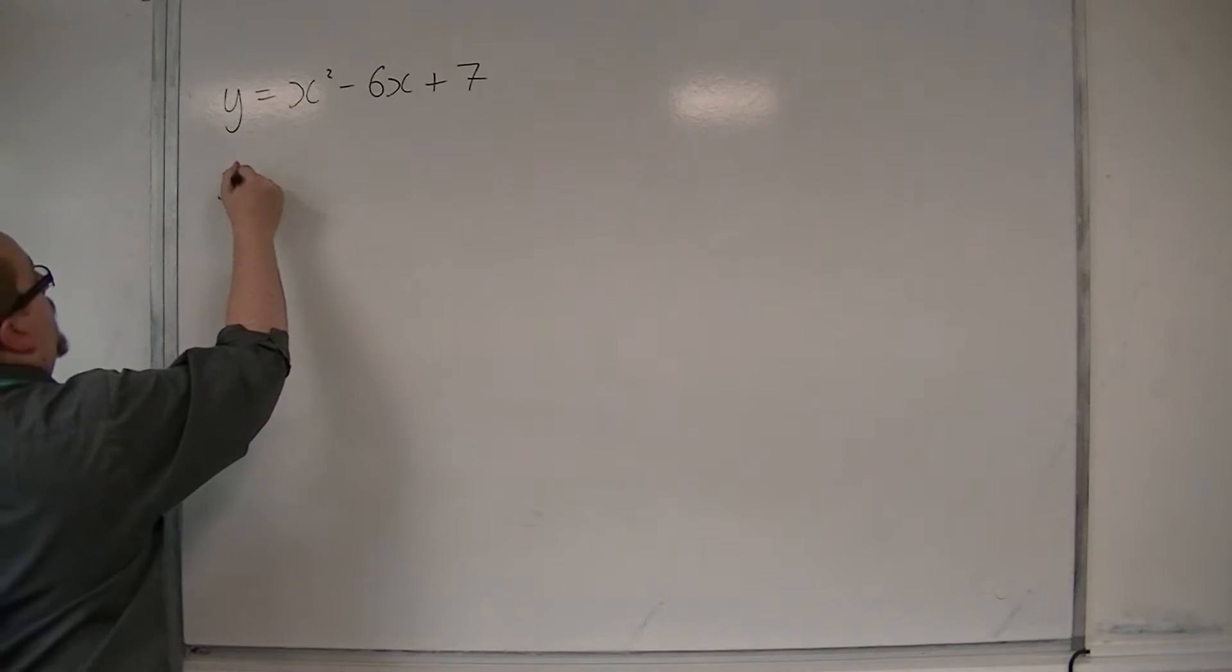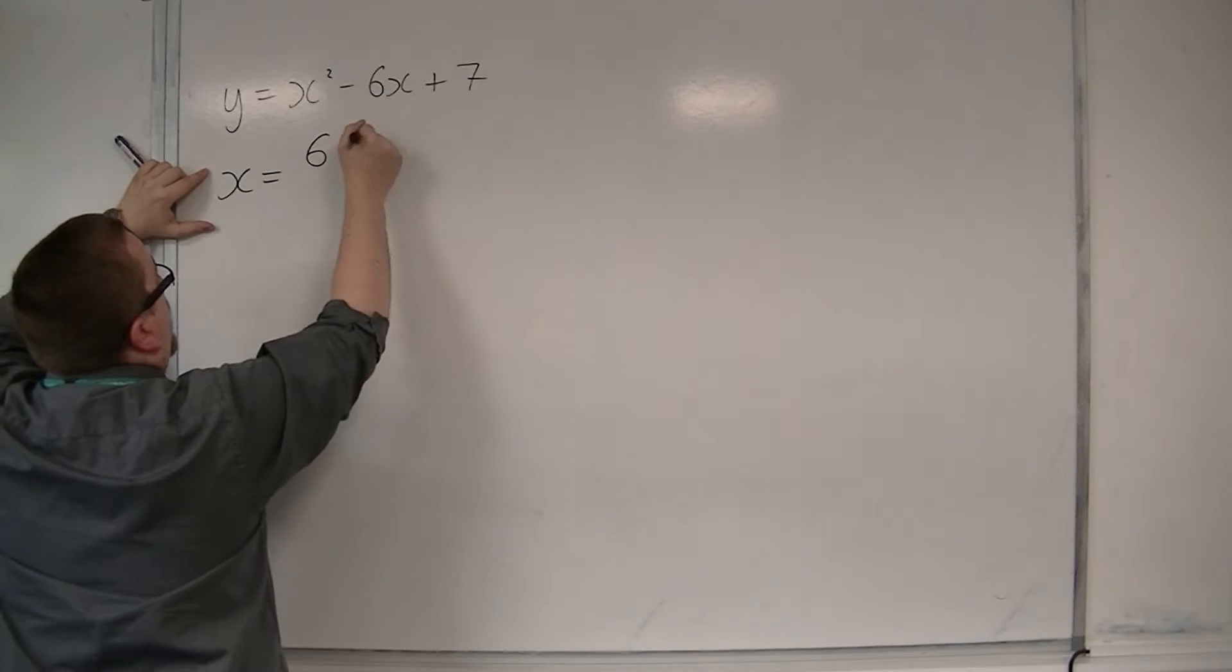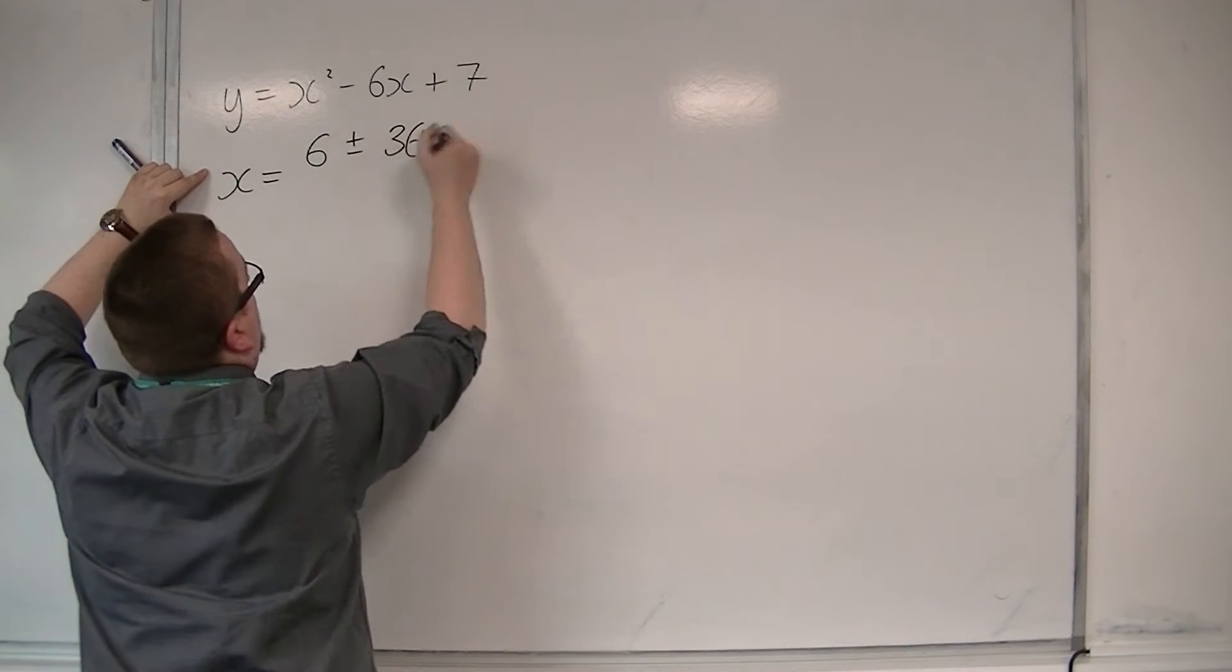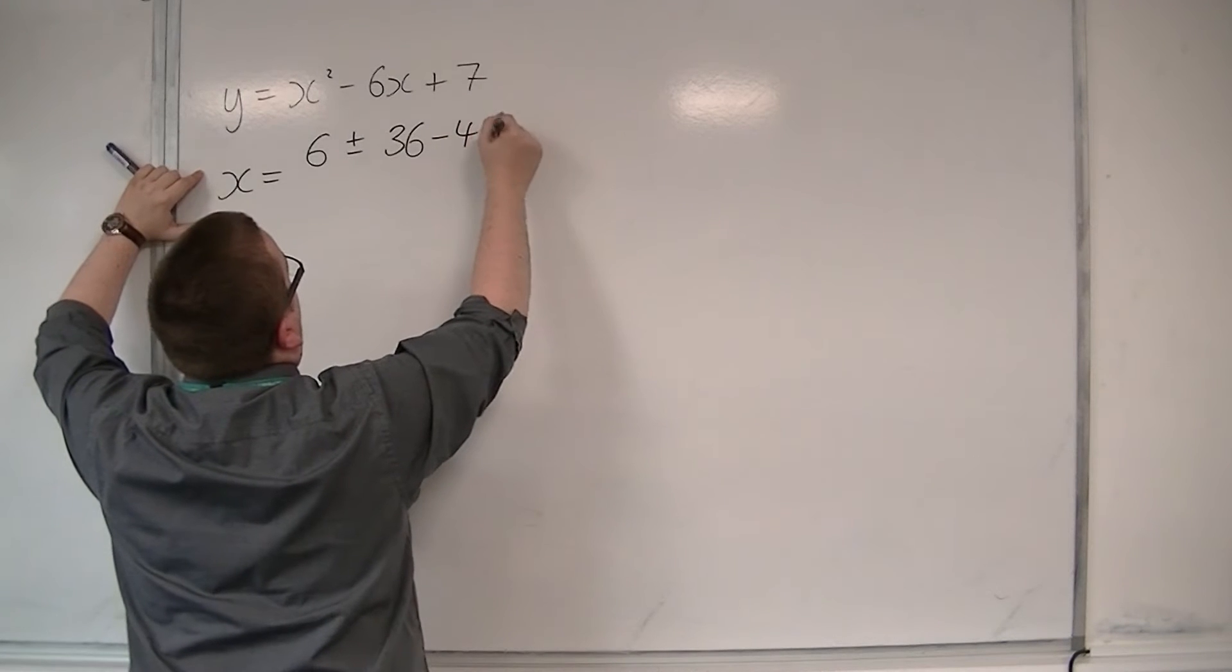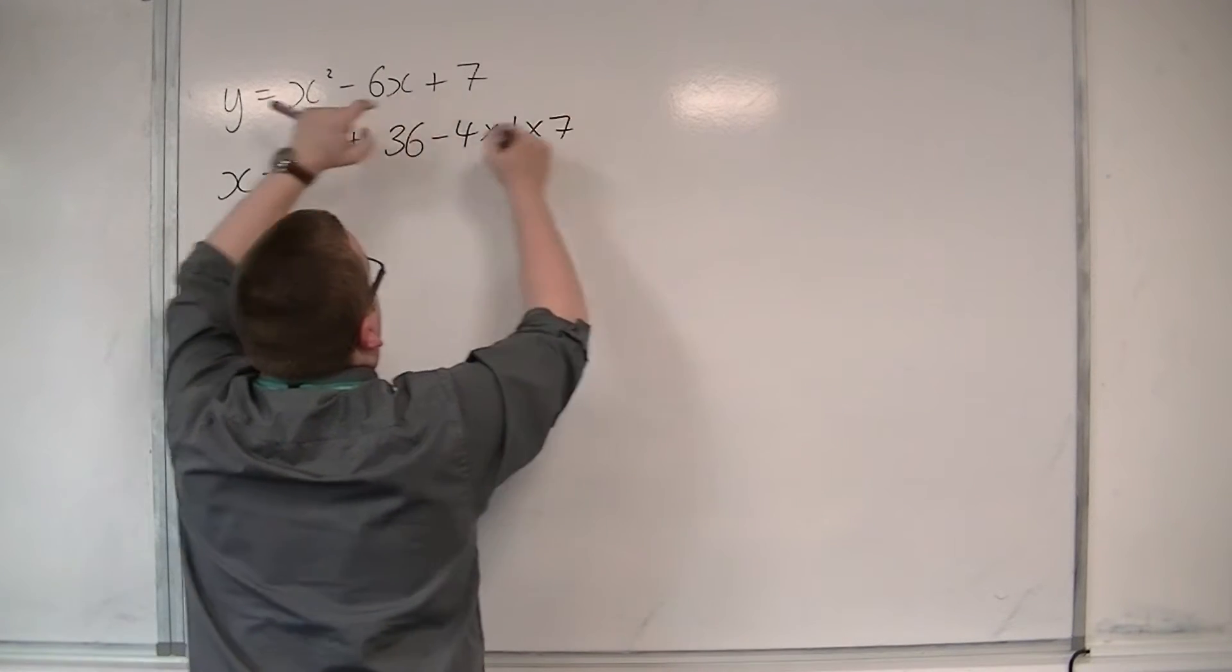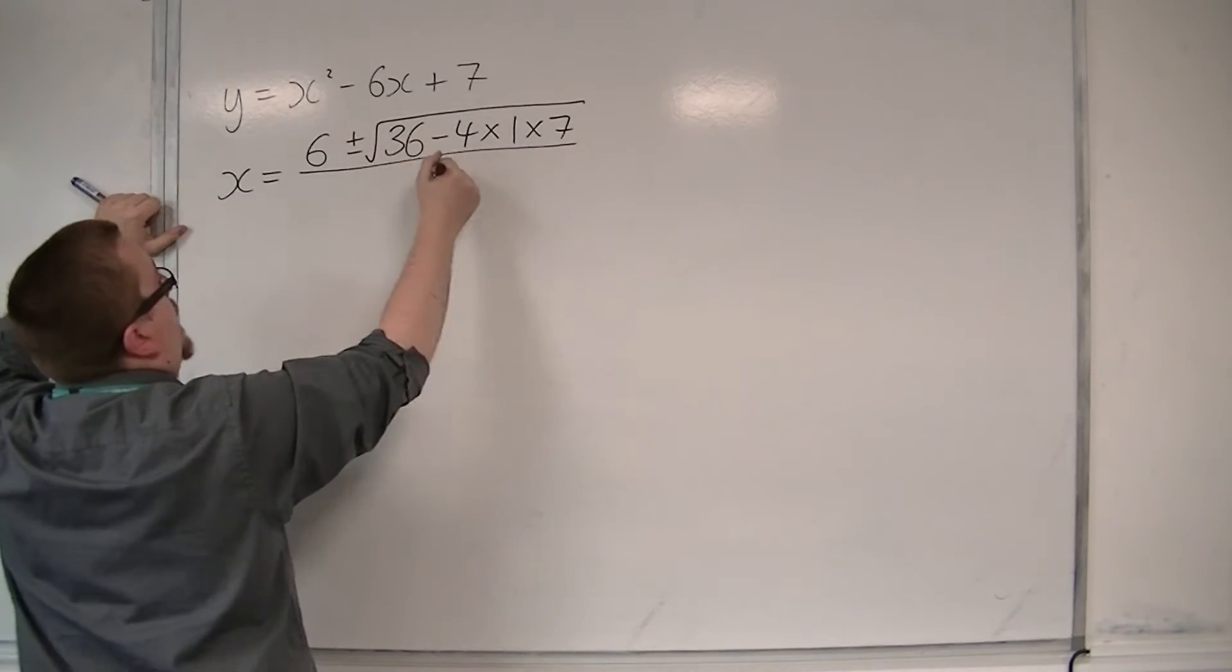So x is equal to minus b, so that's positive 6, plus or minus b squared, which is going to be 36, minus 4 times a, which is 1, times 7, which is c. Square rooted all over 2a, which is 2.